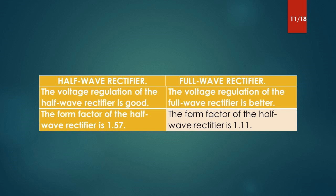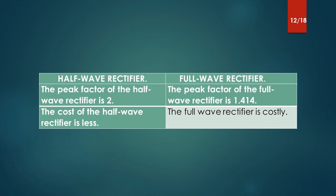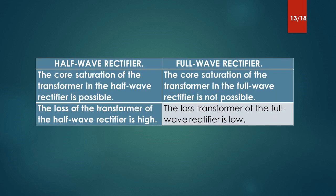The form factor of the half-wave rectifier is 1.57. The form factor of the full-wave rectifier is 1.11. The peak factor of the half-wave rectifier is 2, and the peak factor of the full-wave rectifier is 1.414. The cost of the half-wave rectifier is less, while the full-wave rectifier is costly.